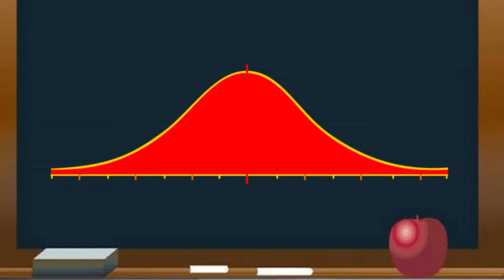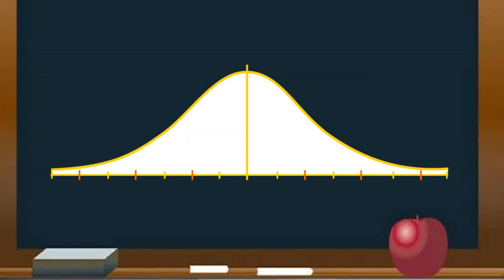The total area under the normal curve is equal to 1 or 100%. The curve is symmetric at the center through the mean. This means that the curve is equally divided into two, 50% below the mean and another 50% above the mean.